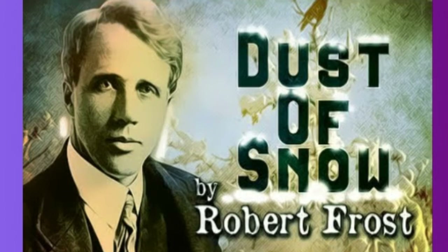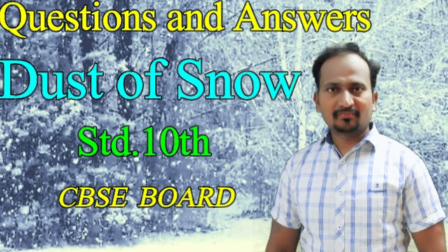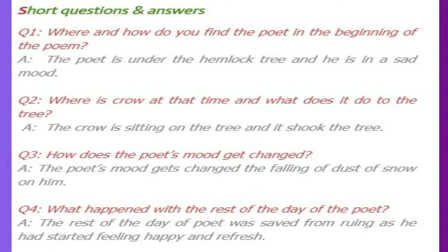Let's see short questions and answers of this poem. Question number one: Where and how do you find the poet in the beginning of the poem? Answer: The poet is under the hemlock tree and he is in a sad mood. Next question: Where is the crow at the time and what does it do to the tree? Answer: The crow is sitting on the tree and it shook the tree.